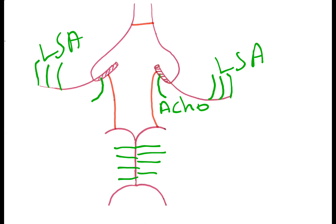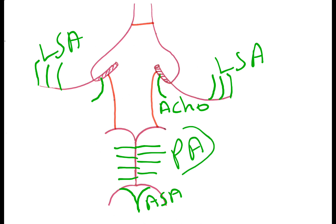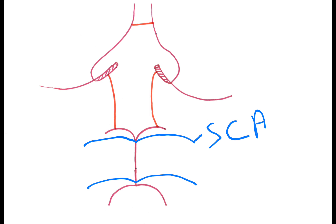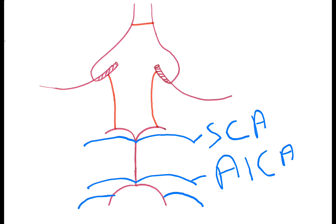From the basilar artery arise the pontine arteries. From the vertebral arteries arise the anterior spinal artery and the pontine artery. Pontine arteries arise from the basilar artery, whereas the anterior spinal artery arises from the vertebral arteries. From the basilar artery arise two cerebellar arteries: the superior cerebellar artery and the anterior inferior cerebellar artery. From the vertebral artery arises the posterior inferior cerebellar artery.